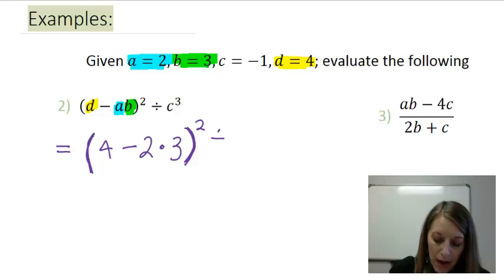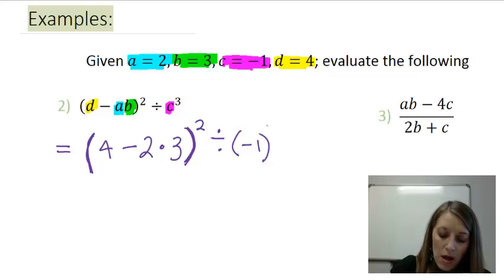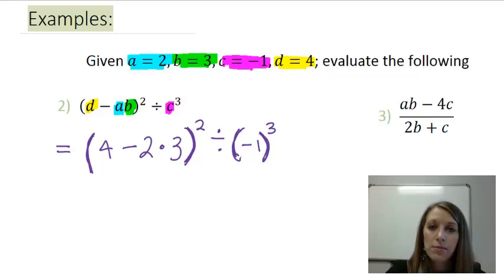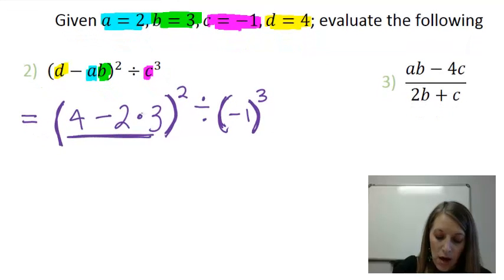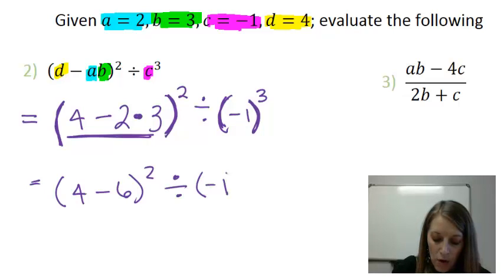Squared divided by C, which is negative 1. Now this one, you definitely need to put parentheses around the C value, because that exponent goes to the whole number, which I'm substituting in for C. So it goes to all of negative 3. So PEMDAS says the inside of my parentheses first. I'm going to do this here, focusing on multiplication before subtraction. So I have 4 minus 6 squared divided by negative 1 cubed.